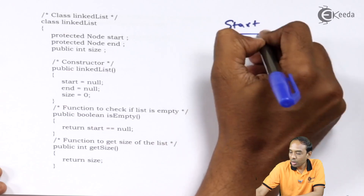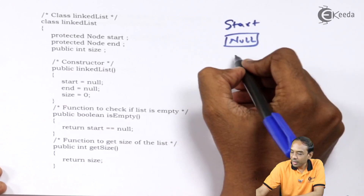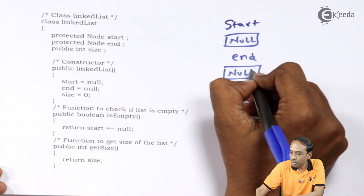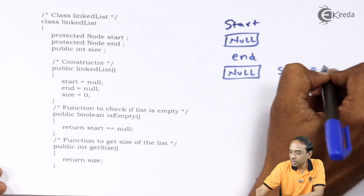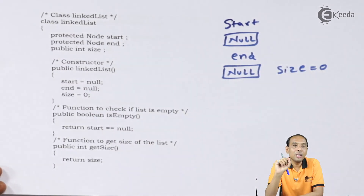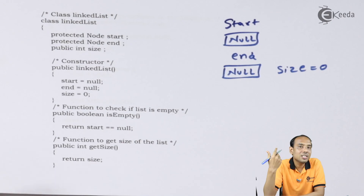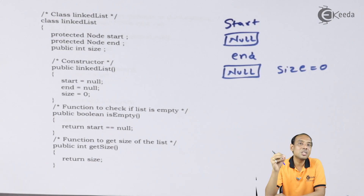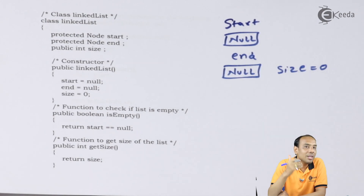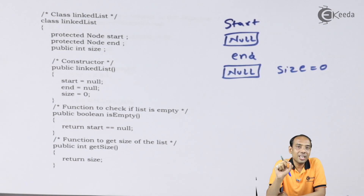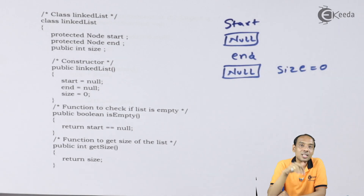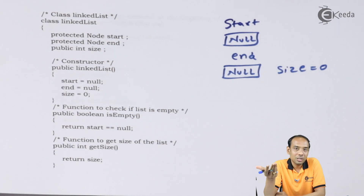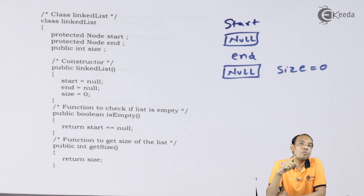So 'start' is set to null, 'end' is also set to null, and 'size' is zero. Now to check whether the list is empty or not — I always check the value of the last element. Whenever the value comes as null, it means we have reached the end of the linked list. So if start is null, it indicates the list is empty, since 'start' is pointing to null.